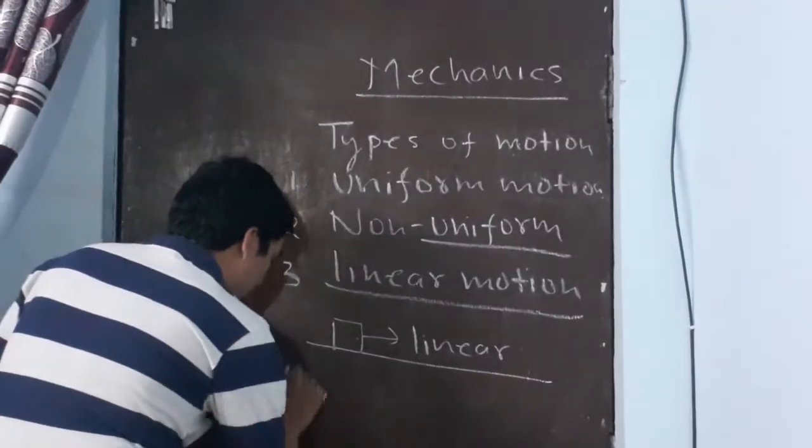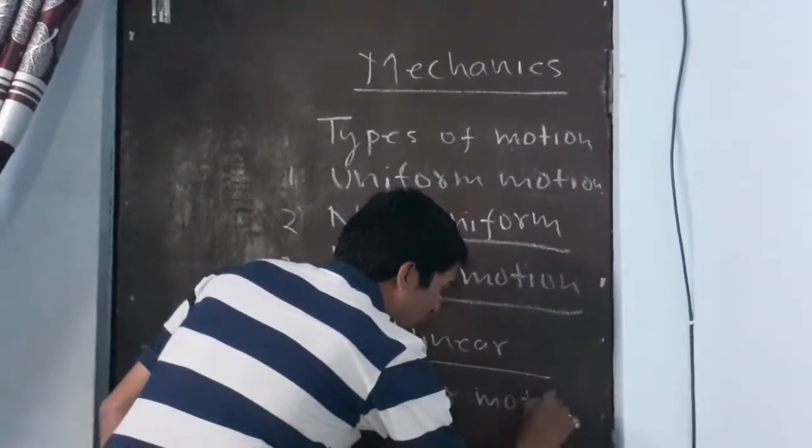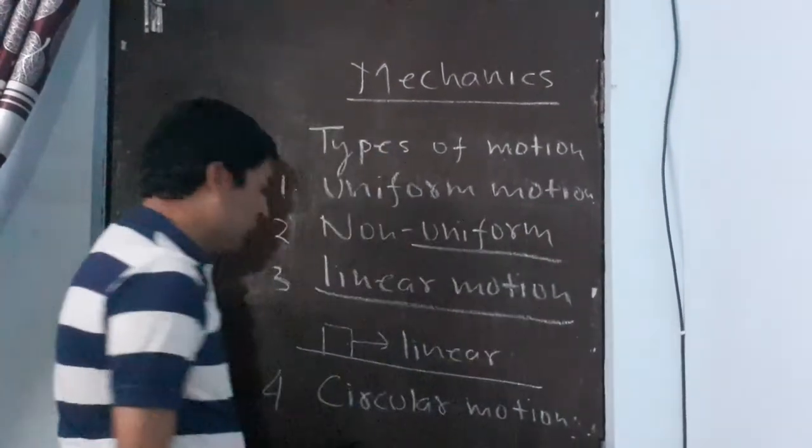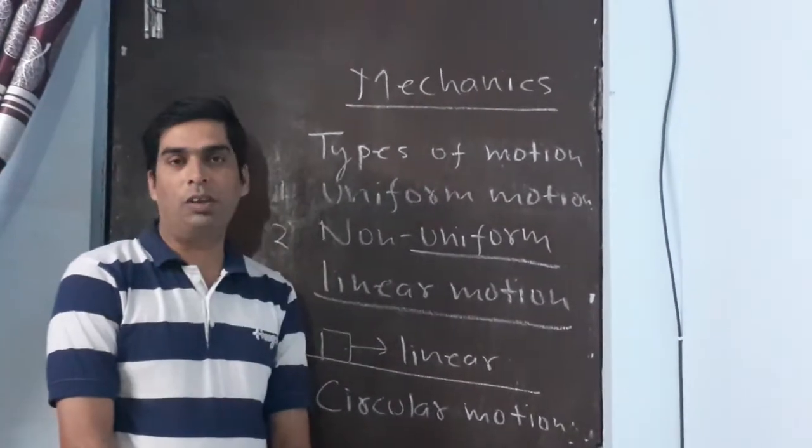Next is circular motion. When a body covers its motion in a circular track, then such type of motion is termed as circular motion.